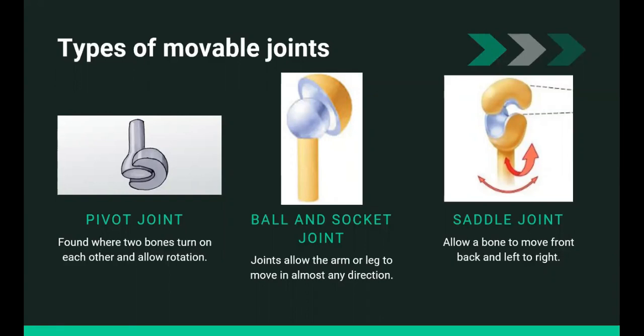Saddle joints allow the bone to move back and forward and left to right. Your thumbs are connected to your hands by saddle joints. The saddle joint in your thumb gives it the ability to reach across the palm of your hand and touch your other fingers.